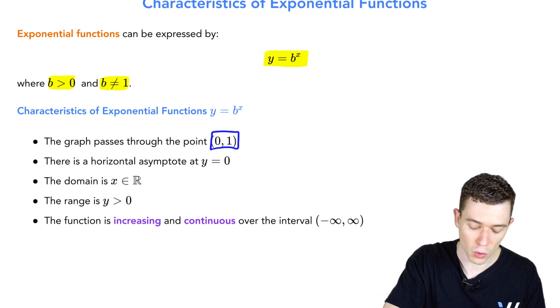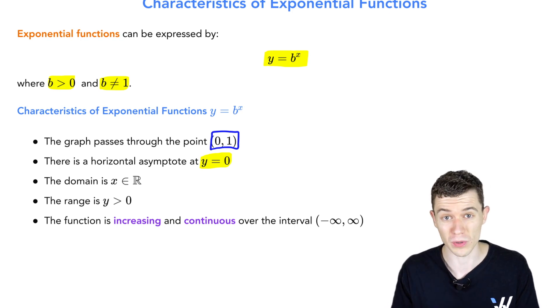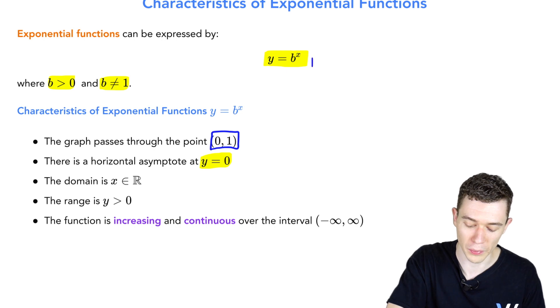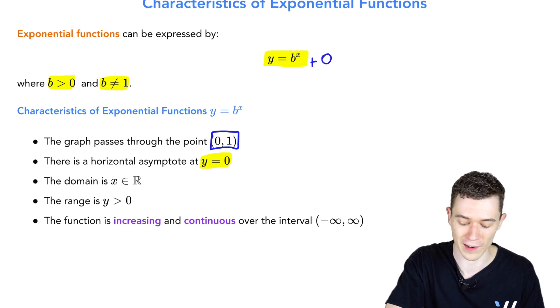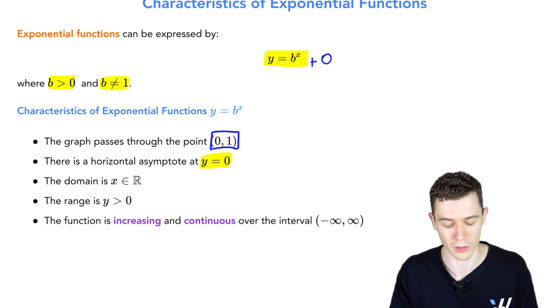Interestingly enough, there's a horizontal asymptote along the x-axis at y equals 0. I like to say there's an invisible plus 0 at the very end here, and that 0 is the horizontal asymptote for these exponential functions.